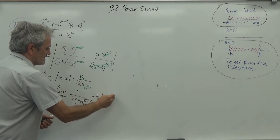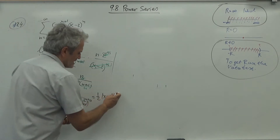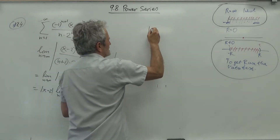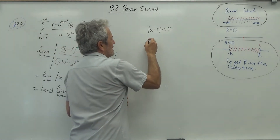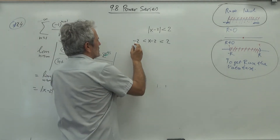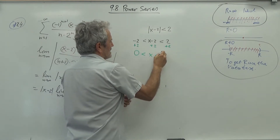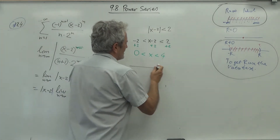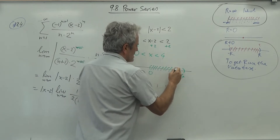The absolute value of (x-2) comes out of the limit, and the limit of n/(2(n+1)) as n goes to infinity equals 1/2. So the ratio test gives (1/2) times the absolute value of (x-2). For convergence, this must be less than 1, so the absolute value of (x-2) must be less than 2.